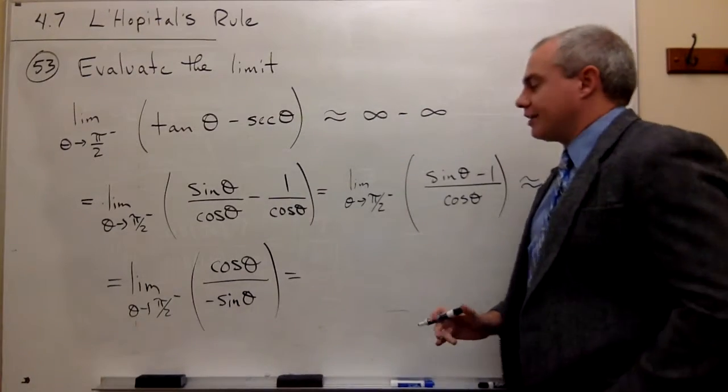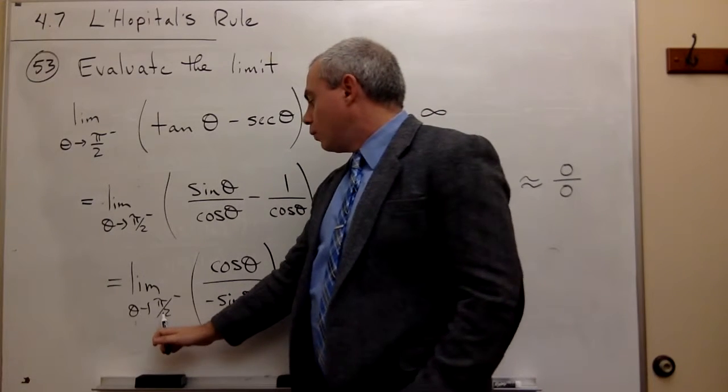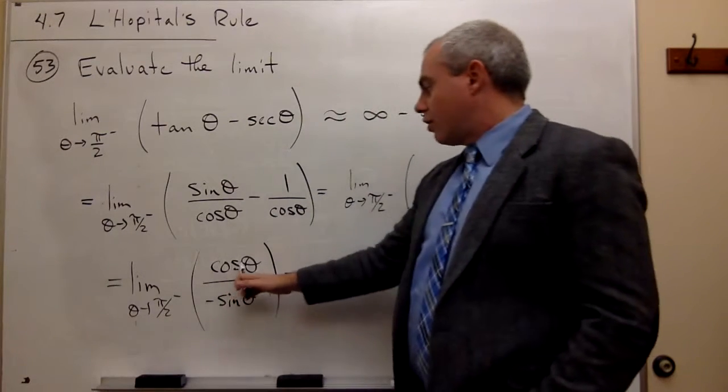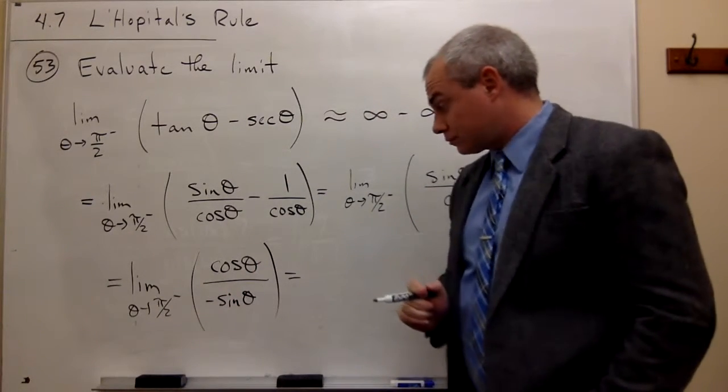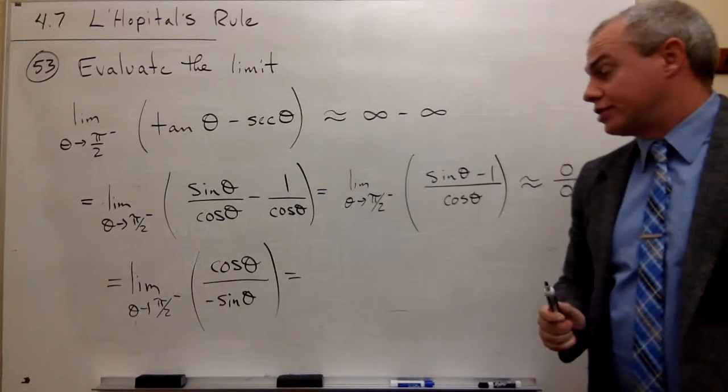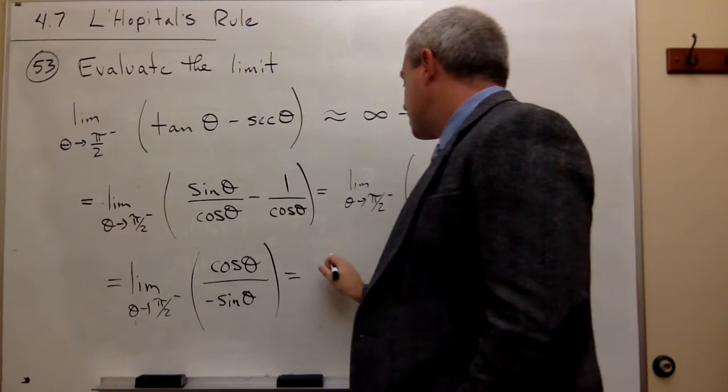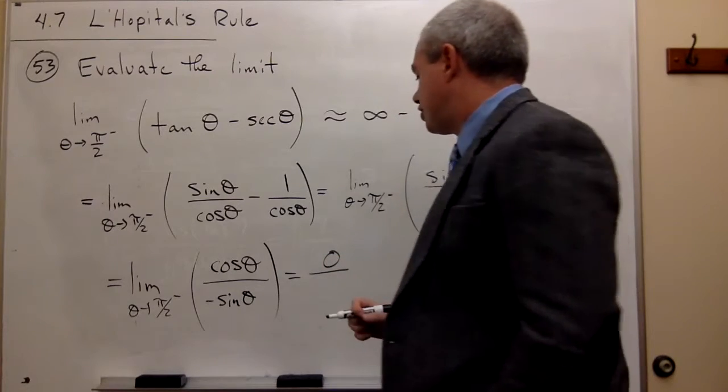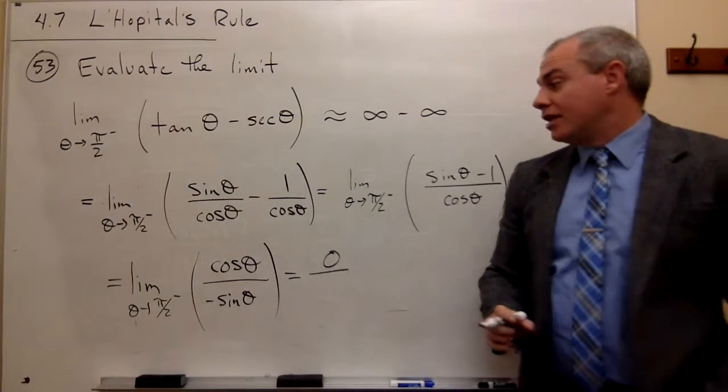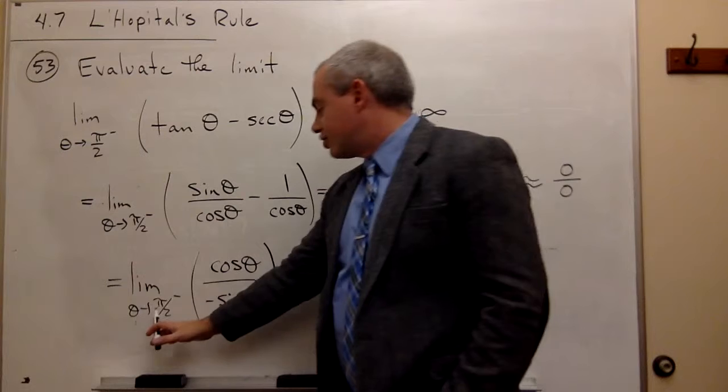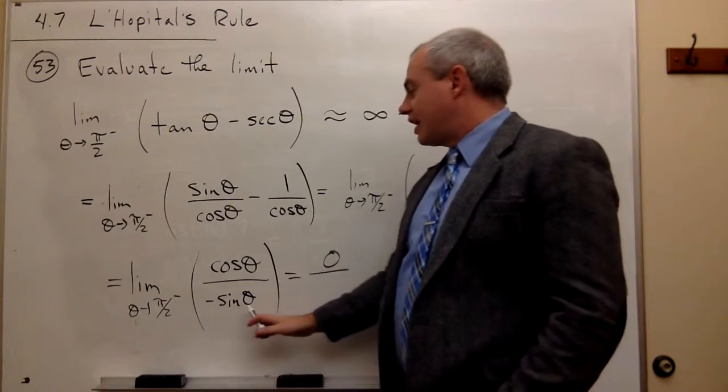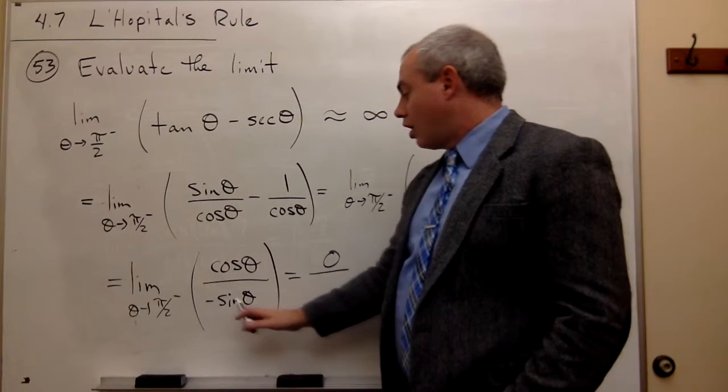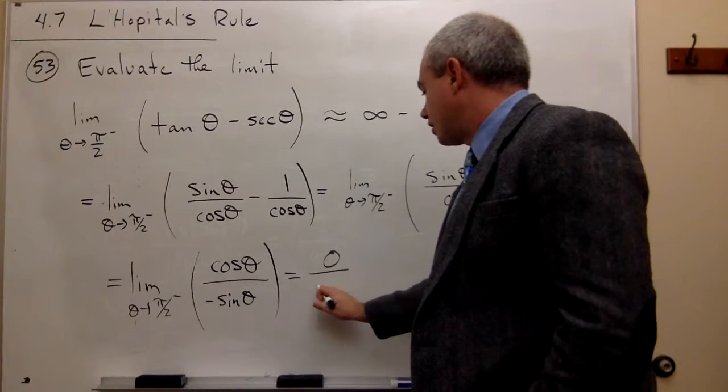And now we can plug things in. So if we have pi over 2, what's cosine of pi over 2? Cosine of pi over 2 is 0. So we get 0 on top, which maybe worries us a little bit. But when we plug in pi over 2 on the bottom, I get sine of pi over 2, which is 1. So I get minus 1 on the bottom.